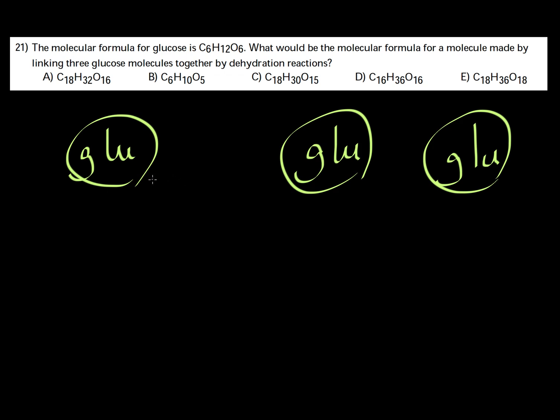When you link two glucose molecules, what happens is that you lose water. Every time you have a glycosidic linkage, you lose water because this reaction is called a dehydration reaction.